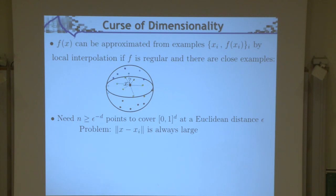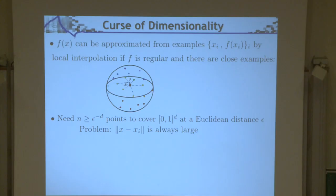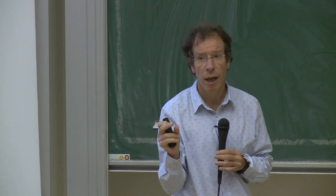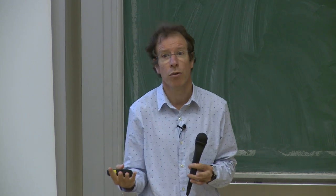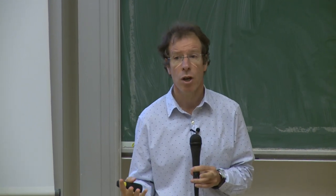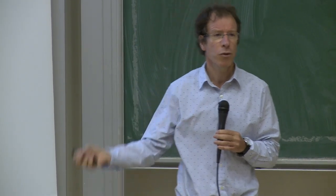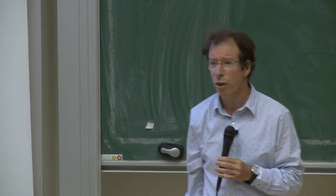If you take a simple cube from 0 to 1 in dimension d, to guarantee a neighbor at distance epsilon, you need to sample every epsilon — requiring epsilon to the minus d samples. If epsilon is 1/10 and d is 100, you already have 10 to the power 100, more than the number of atoms in the universe. And d is not 100 but rather a million for an image. Your data, even with millions of images, are very isolated like stars in the sky.